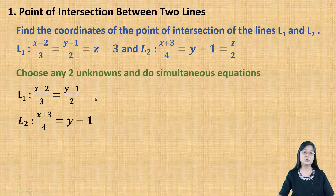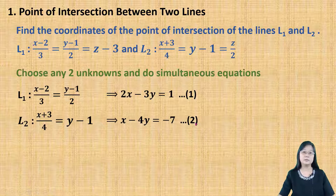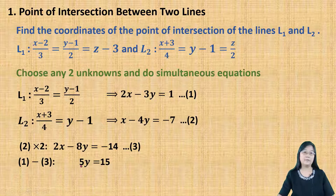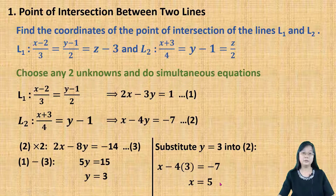From L1, when I rearrange the equation, I get one linear equation, and I name it as 1. And from line L2, when I rearrange the equation, I get another linear equation, and I name it as number 2. So, by using these two equations, I'm going to carry out the simultaneous equation in order to find the value of X and Y. First, I multiply equation 2 with 2, then I get equation number 3. Then, by using equation number 1 minus equation number 3, I get 5Y equals 15. From here, I get the value of Y is equal to 3. Then, I substitute Y equals 3 into equation number 2, and I get the value of X is equal to 5.